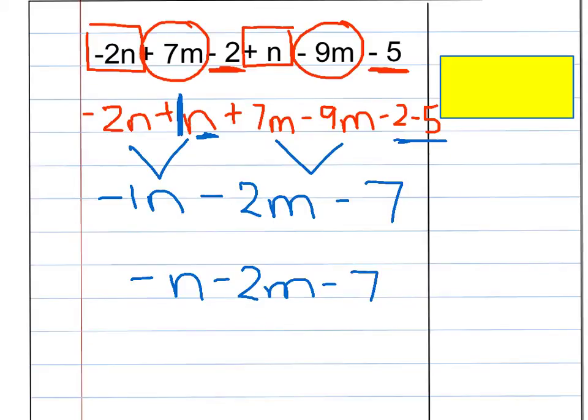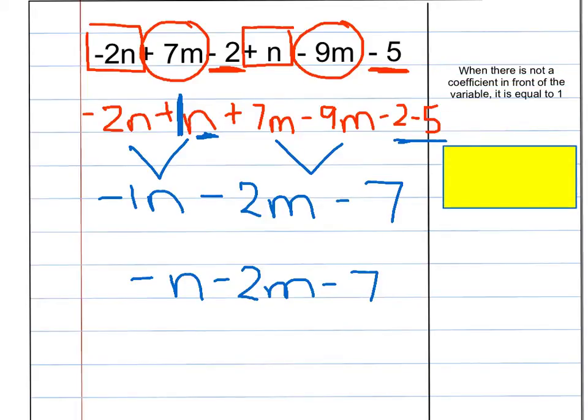Something else that you might want to put in your notes is that when there is not a coefficient in front of the variable, it is equal to 1. And remember, I talked about that right here. Because I was saying that there's no coefficient in front of the N, so I put the 1 there.